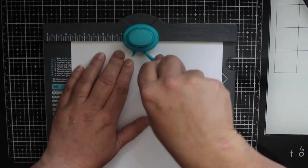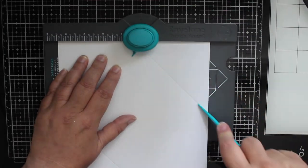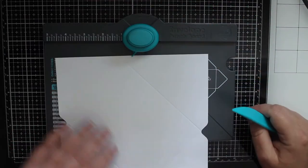Now I just repeat the process for all sides of the paper, lining up the previous score line, making a new score line, and punching the paper.